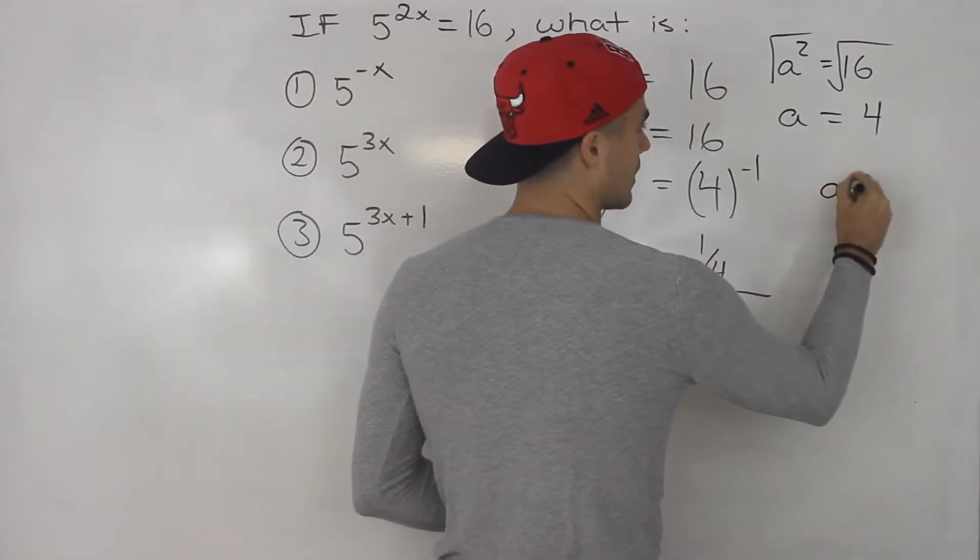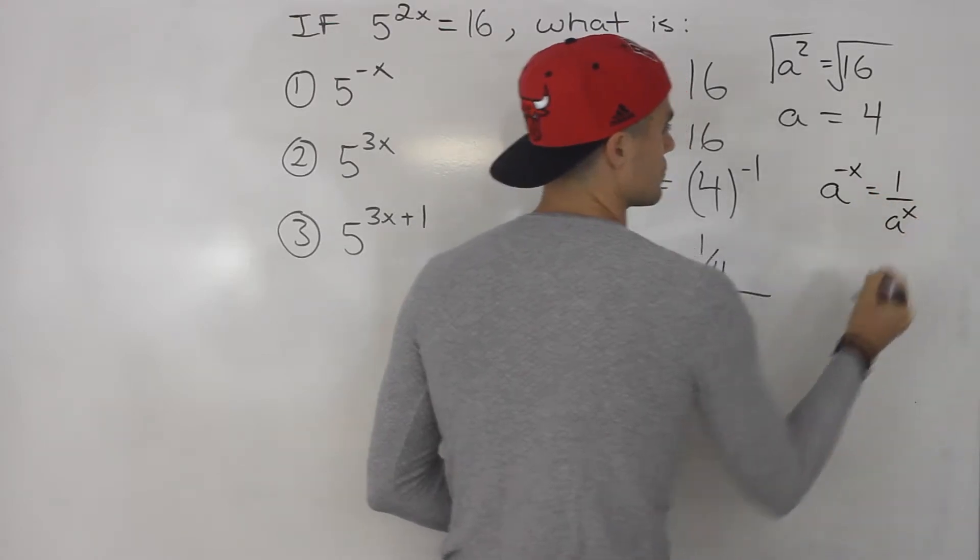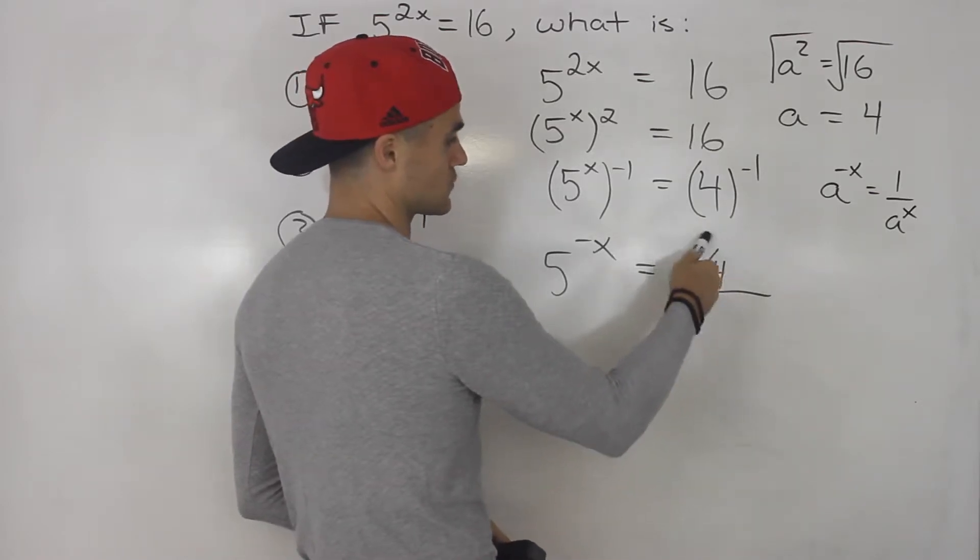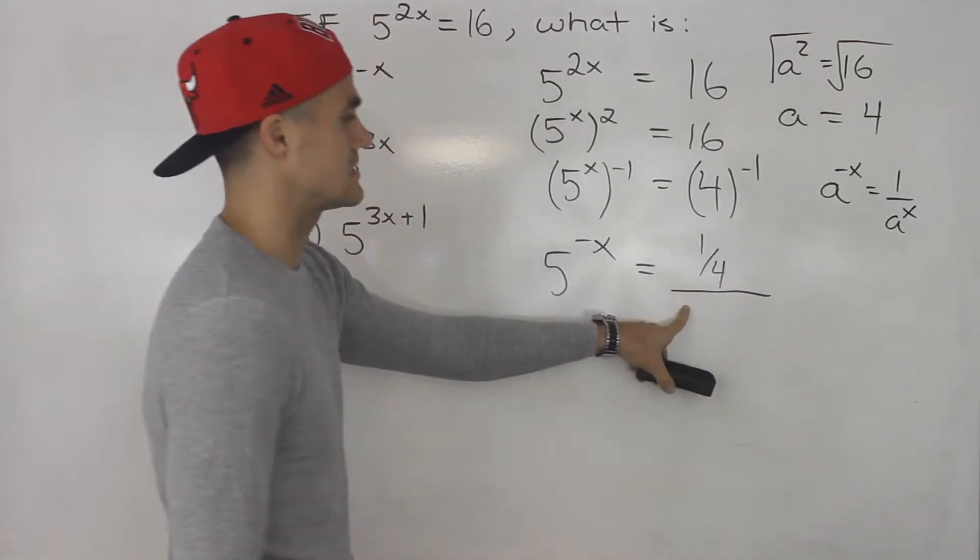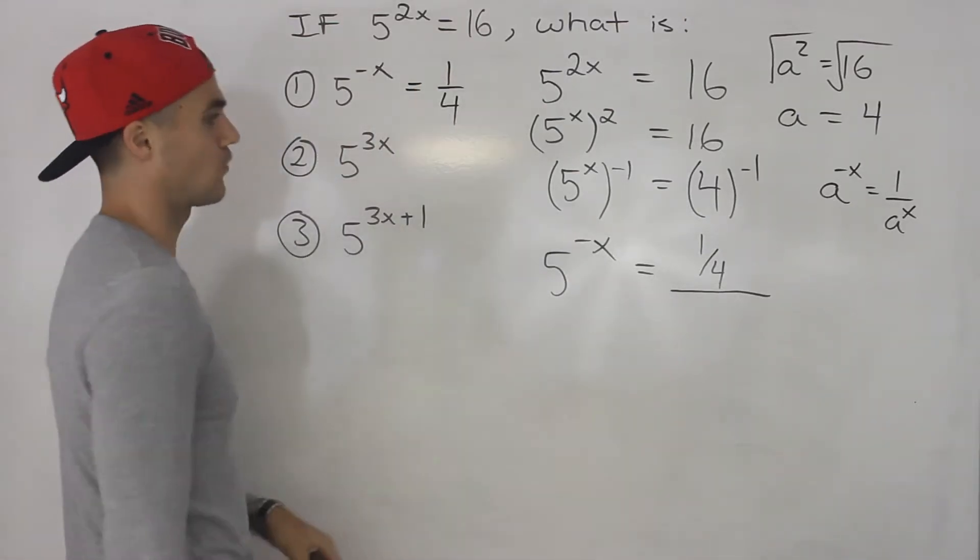If you remember the exponent laws, a to the negative x is equal to 1 over a to the x. So 4 to the negative 1, bring the 4 down, 4 to the power of 1 is just 4, so it's 1 over 4. So that is the answer for number 1. This is equal to 1 over 4.